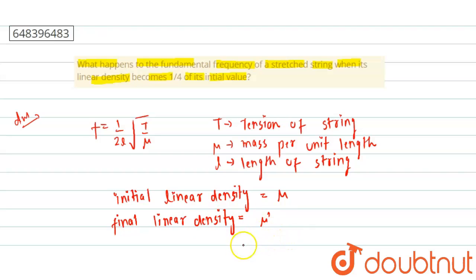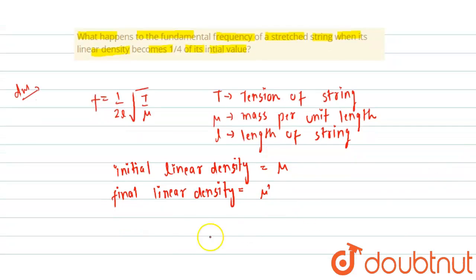is equals to mu dash. And in question it is given that final linear density, which is equals to mu dash, is equals to initial linear density upon four.